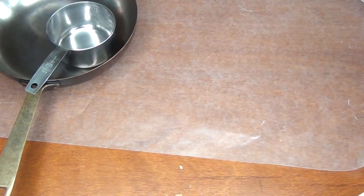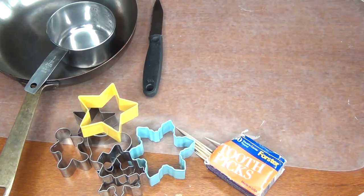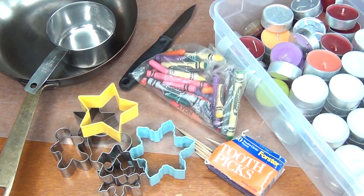For this project, you'll need some wax paper, a pan, something to melt your wax in that's taller than your pan, cookie cutters, a knife, toothpicks, tea light candles, and crayons.